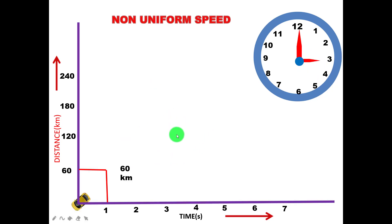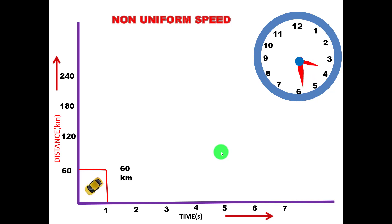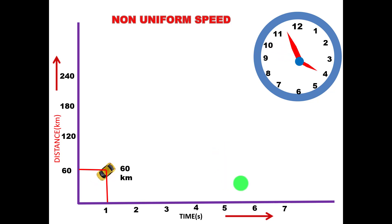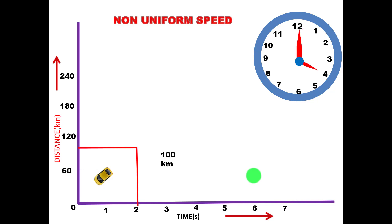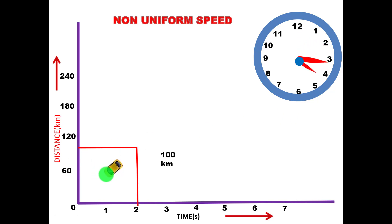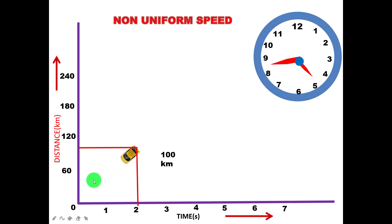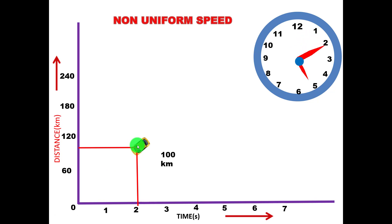Now let us consider non-uniform speed. The car starts at position 0 at 3 o'clock. For the first one hour, the car covers 60 km. But in the second hour, the car covers only 40 km, reaching 100 km total. In the next hour it reaches 180 km — so the distance covered each hour is not equal.